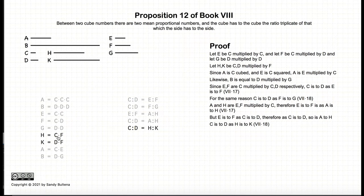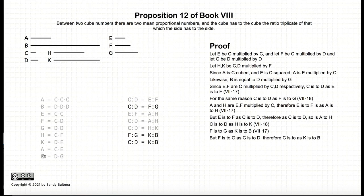Continuing, we have c to d is equal to h to k. We have f to g is equal to k to b. And since f to g is equal to c to d, f to g is equal to k to b. We have that c to d is equal to k to b.